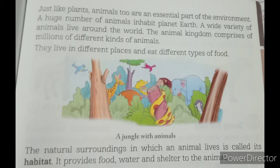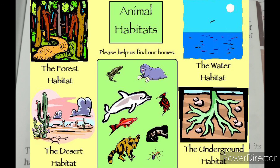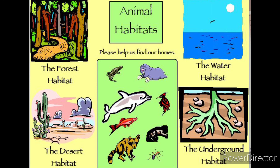They live in different places and eat different types of food. The natural surroundings in which an animal lives is called a habitat. It provides food, water, and shelter to the animal. Forests, wetlands, deserts, and grasslands are some of the unique habitats.